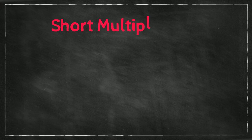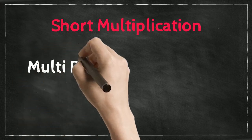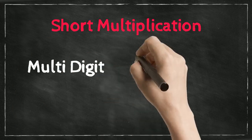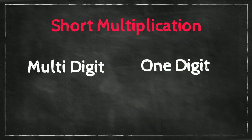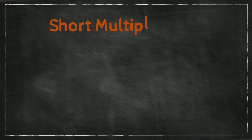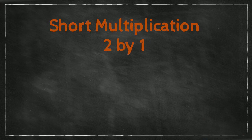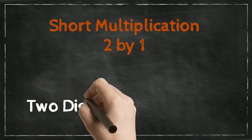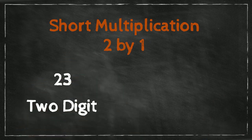So what is short multiplication? Short multiplication is when you multiply a multi-digit number by a one-digit number. But today we are learning about the multiplication of a two-digit number like 23 by a one-digit number like number five.